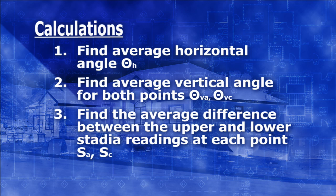The first step is to find the average horizontal angle between the two points in reference, keeping in mind you may have to add multiples of 360 degrees to account for the instrument resetting to zero after it has accumulated 360 degrees of horizontal angle turning. Next, find the average vertical or zenith angle for each point A and C.